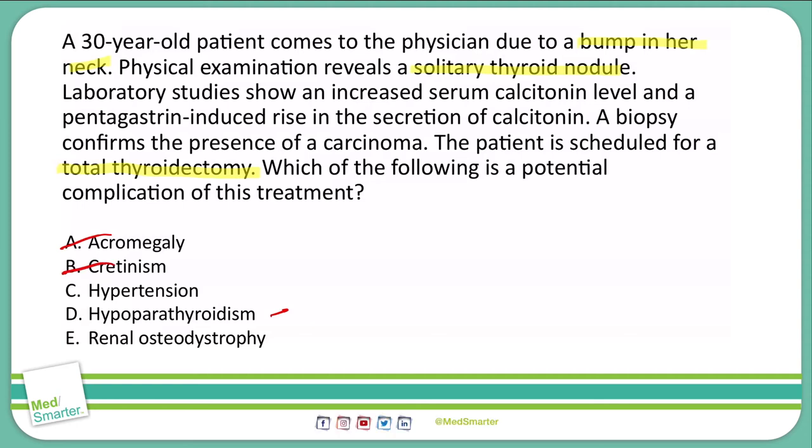C — hypertension. While hypertension can be caused by a lot of things, taking the thyroid out is not going to be a cause of hypertension. So that's a bad answer.